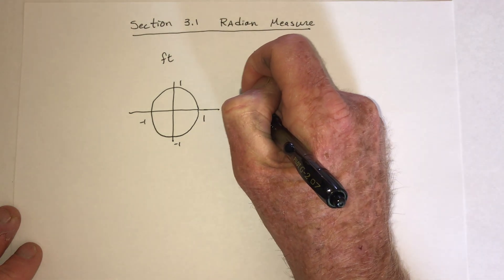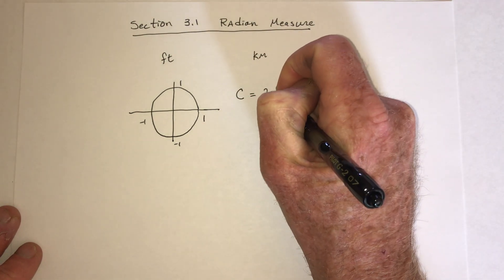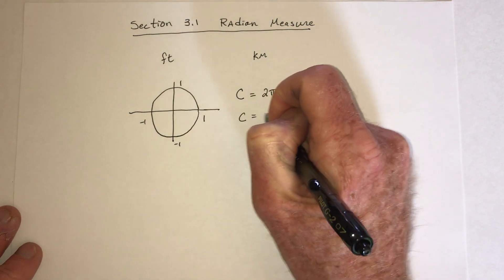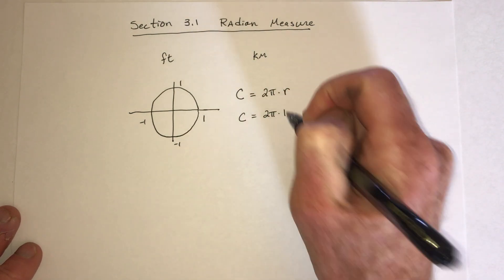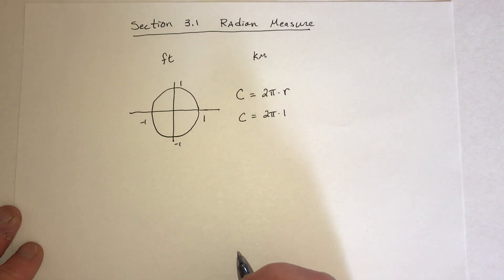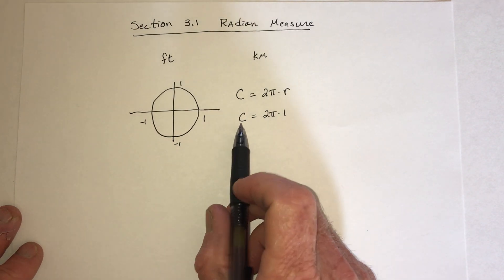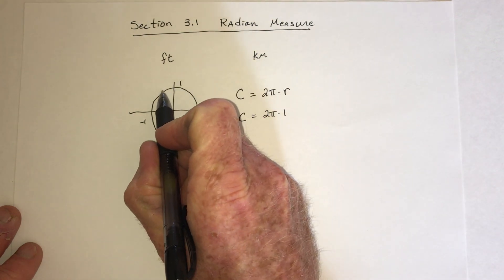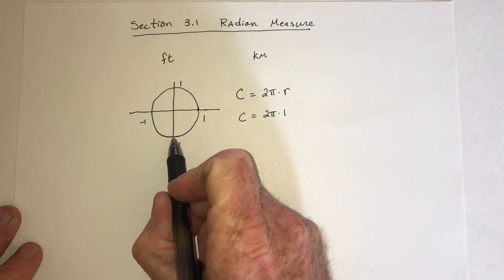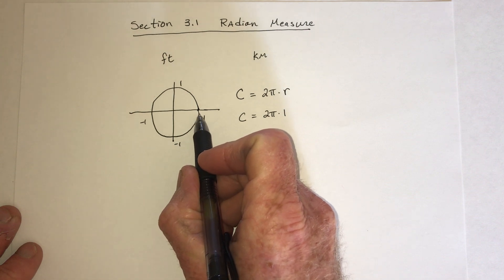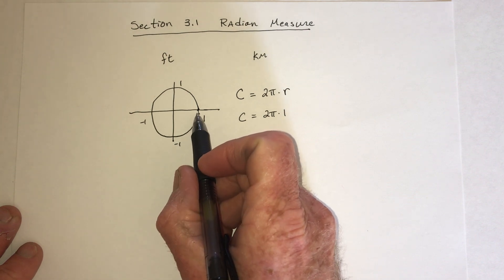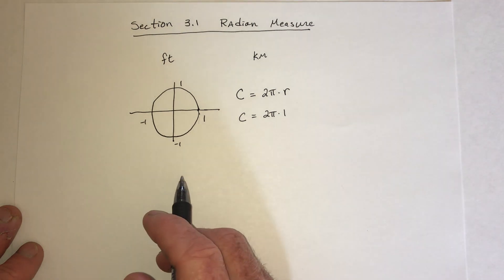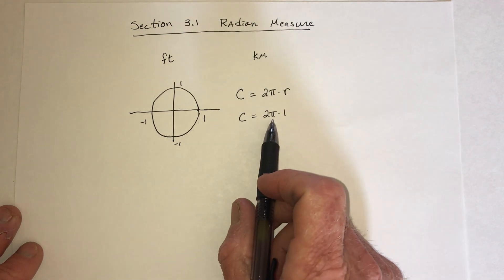Then the formula for circumference is 2 pi times the radius. So in this case, that would be 2 pi times 1. Or in other words, just 2 pi. Well, circumference means go around the circle one time. So go around the outside part of the circle one time. So when you do that, you complete one circle. If we were talking about degrees, that would be 360 degrees. If you're talking about radians, that would be 2 pi.